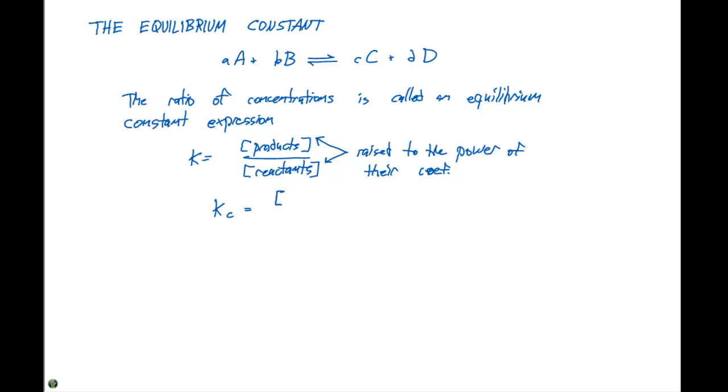So for this particular reaction, we're going to take our concentration of C raised to the C power times the concentration of D raised to the D power, divided by the concentration of A to the A power times the concentration of B to the B power. So this is going to be our equilibrium expression, the ratio of the products divided by the concentrations of the reactants.